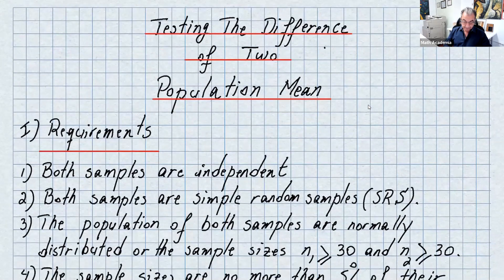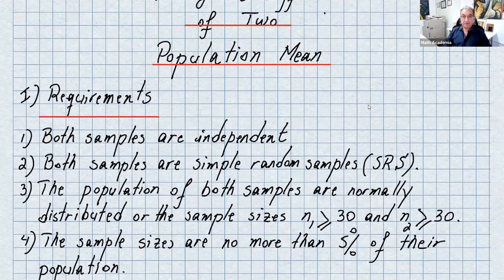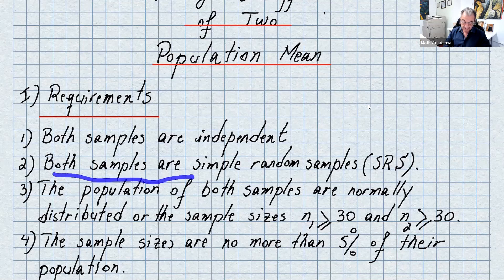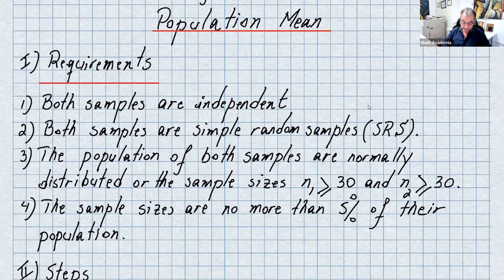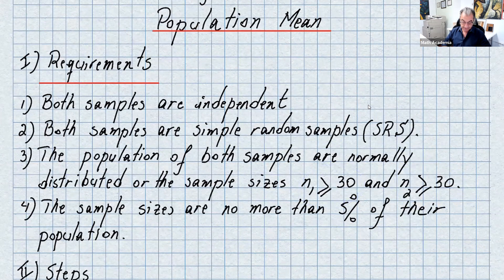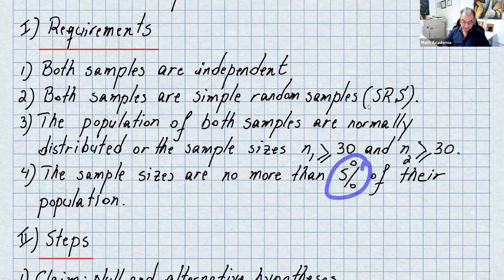The requirements: both samples are independent. One sample has nothing to do with the other one — you just pick the samples from different places. Both samples are simple random samples, or SRS. The population of both samples are normally distributed, or the sample sizes N1 and N2 are each greater than or equal to 30. The sample sizes are no more than 5% of their population.